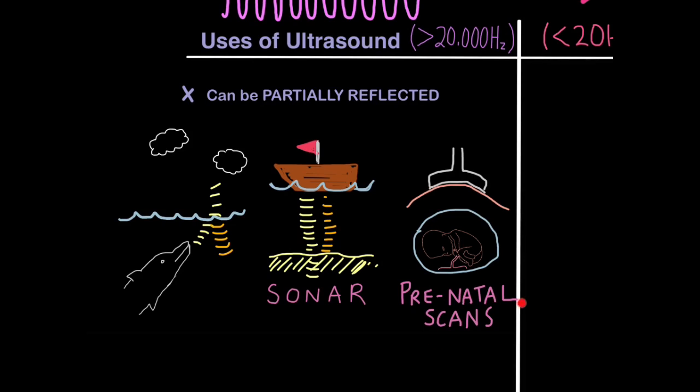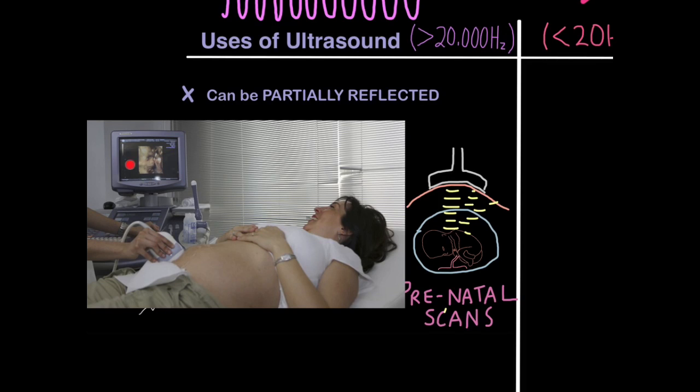This is how prenatal scans work as well. You've got lots of different mediums here with different density. Here's the ultrasonic emitter, the thing that produces ultrasound. You've got skin, muscle, amniotic fluid, the baby with the bones and everything. Just like before, the sound travels and gets reflected as it travels through mediums of different density. The timings and distribution of these echoes are processed by a computer to produce an image on a screen so you can get a representation of the fetus inside the womb.